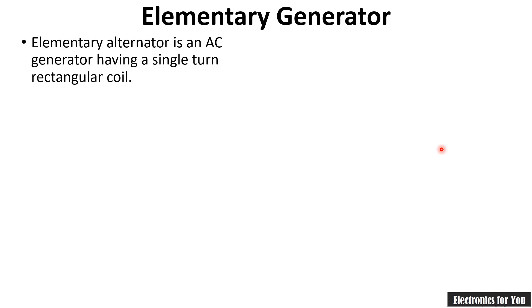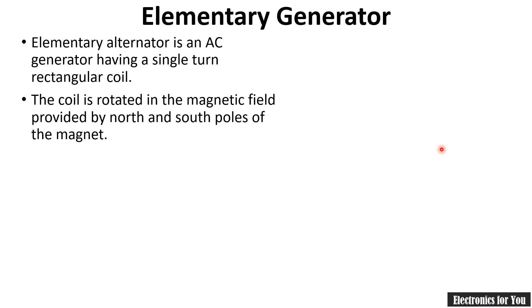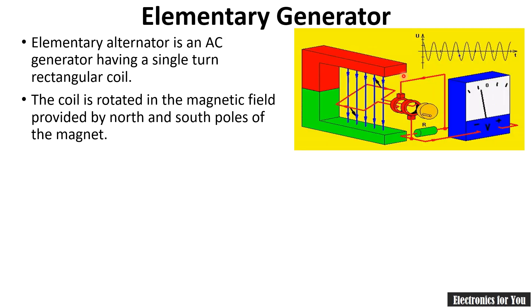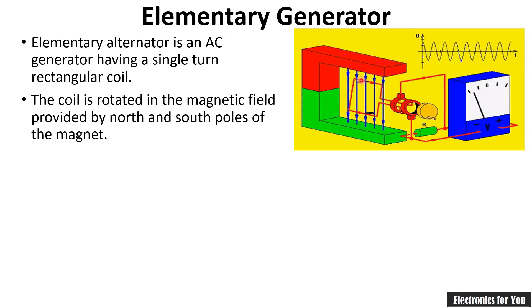In my previous video I had explained generation of single phase supply by elementary generator. An elementary generator is a device which has a single turn of rectangular coil and it generates the single phase supply. The coil is rotated in a magnetic field, with a north pole and south pole, and the magnetic lines of forces are indicated here in blue color. As this coil is rotated, it will generate an EMF.